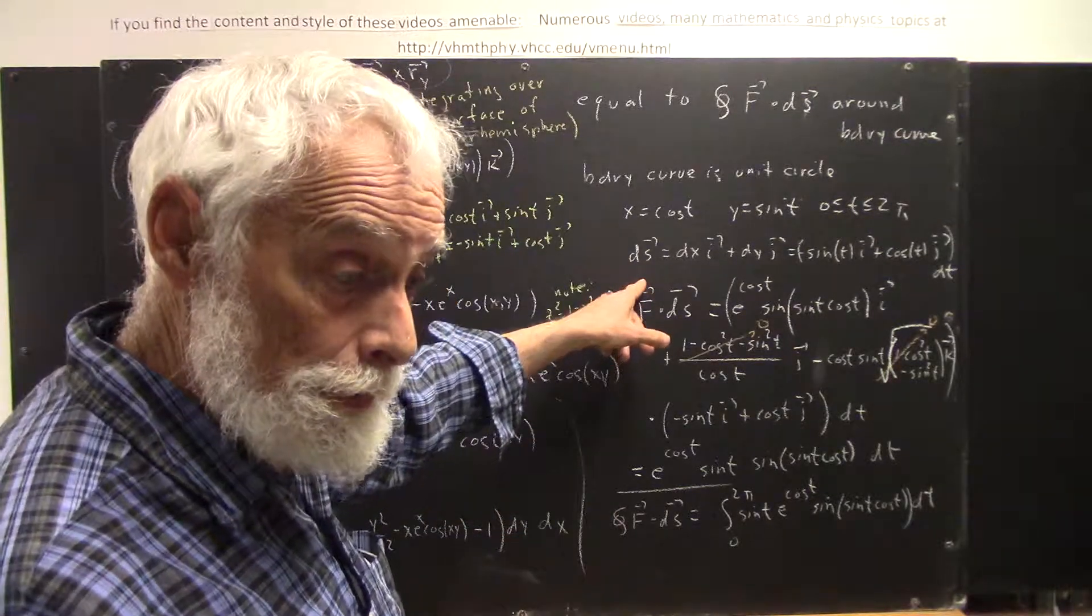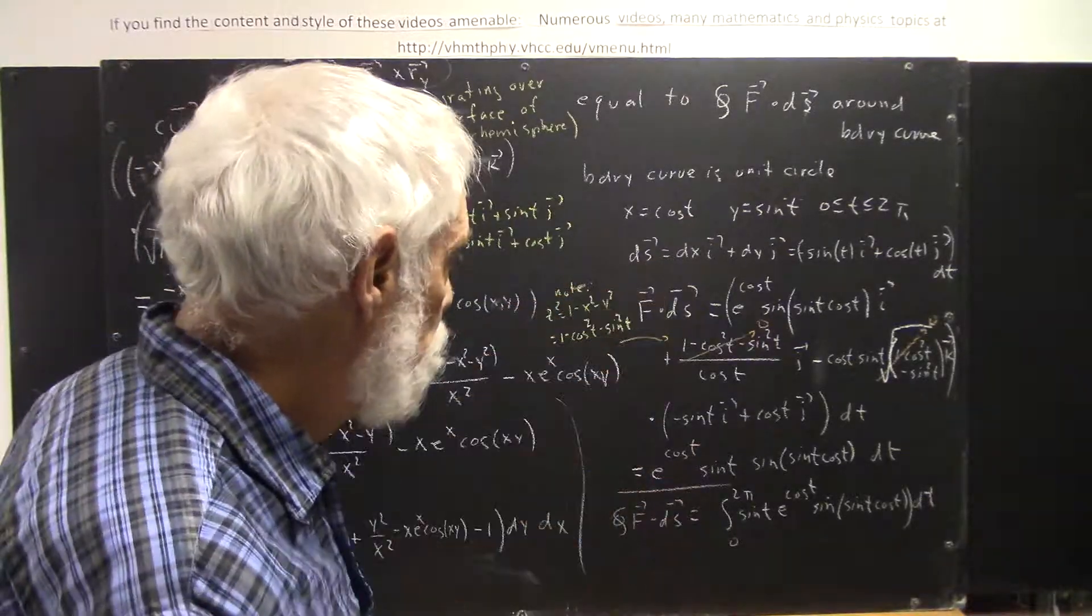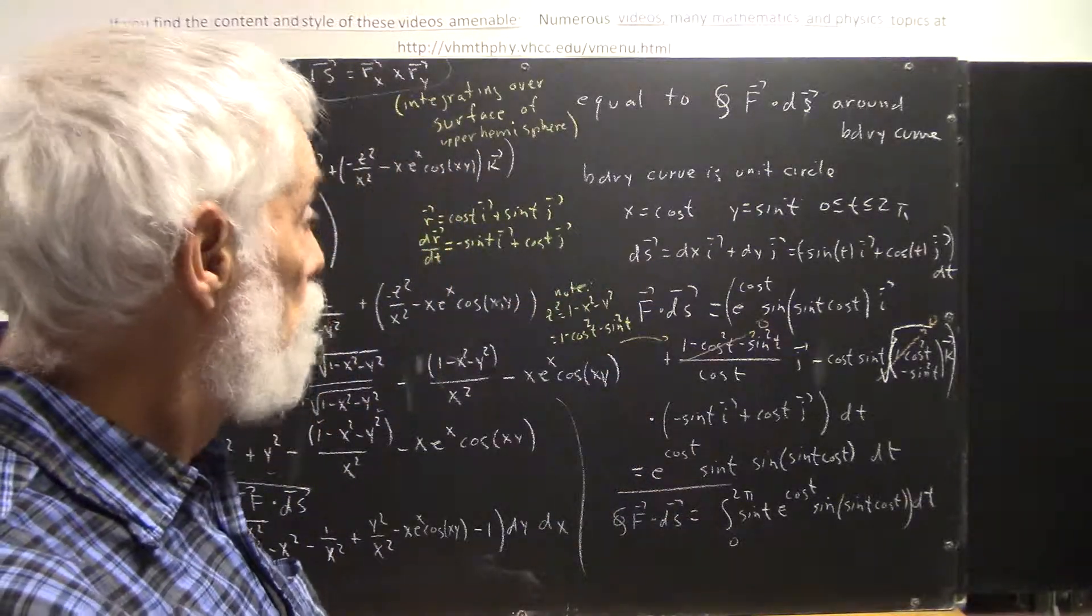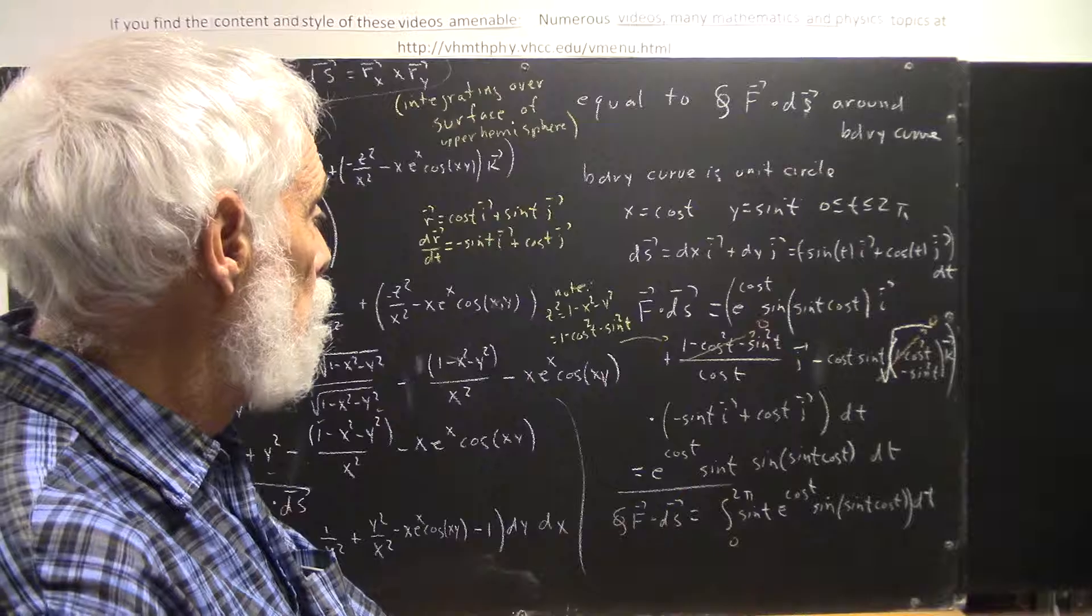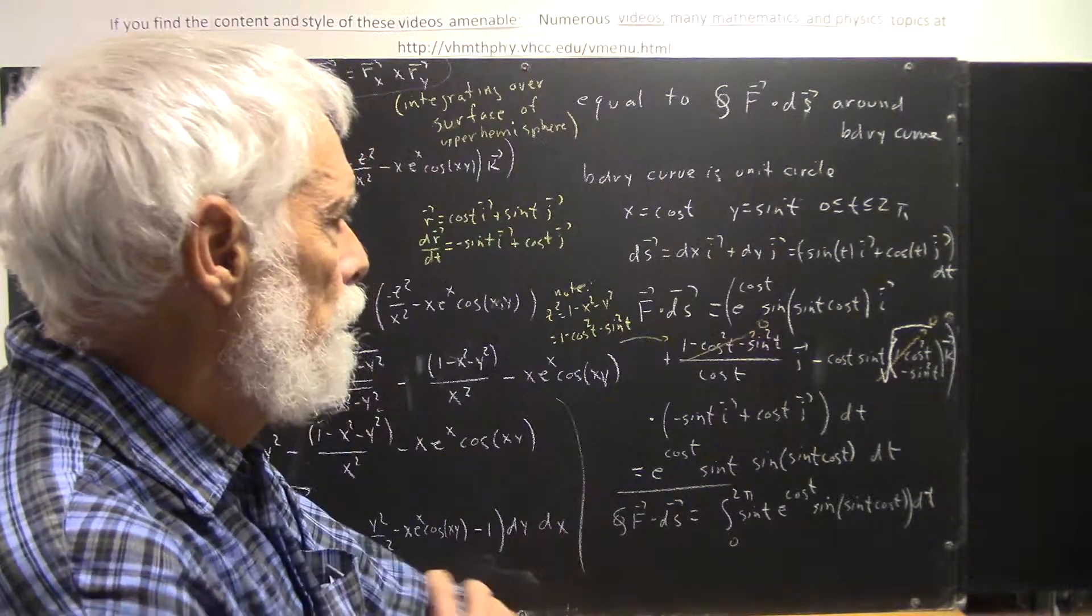Just our usual standard parameterization that takes us around the unit circle in the counterclockwise direction. Our ds, well, this is distance increment,